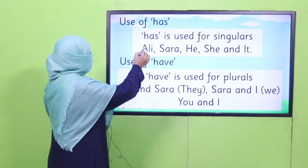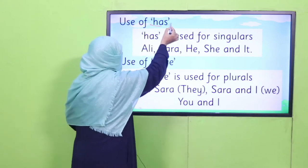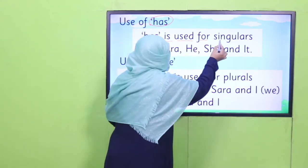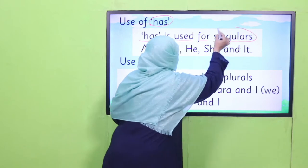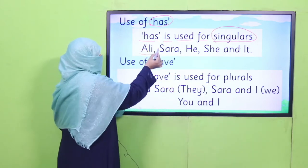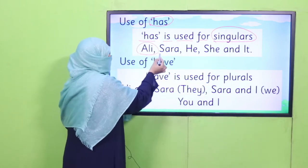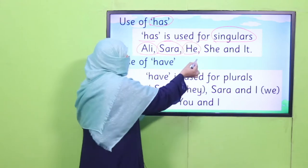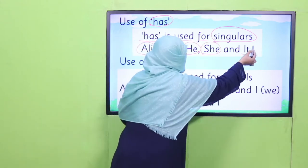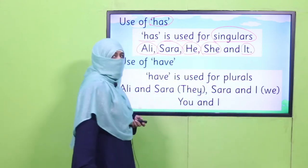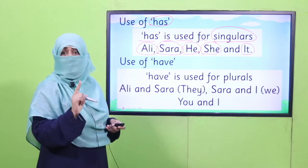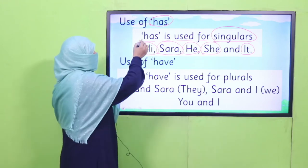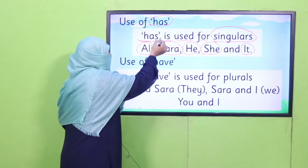But when to use have and when to use has, we have to learn it. Use of has: has is used for singulars — means a boy, Ali, Sara, a girl, he, she, or it. It may be a living or non-living thing. When it is a singular naming word, we use has.